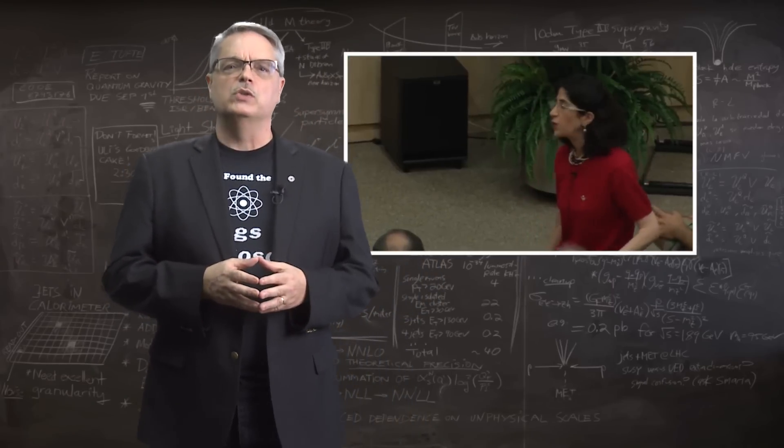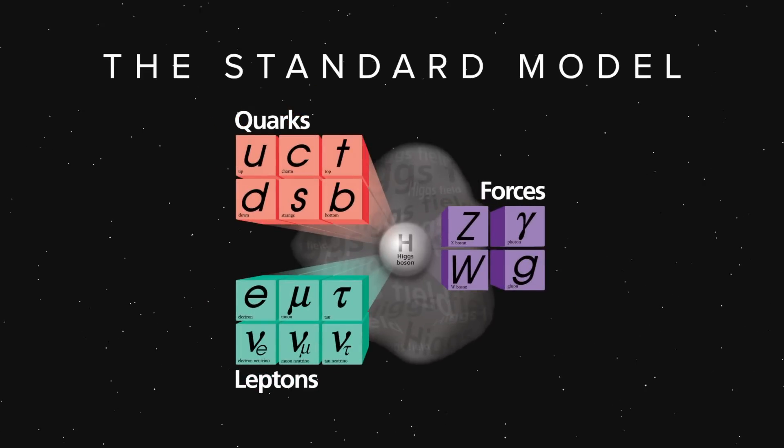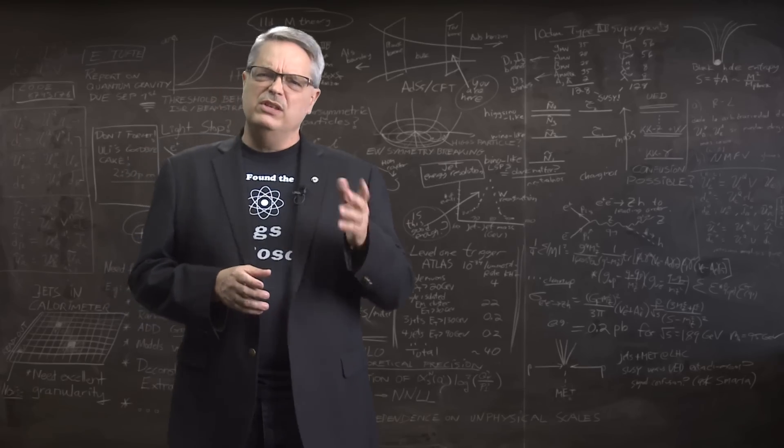Before the Higgs boson was discovered, the Standard Model of Particle Physics was incomplete. The discovery of the Higgs boson, and by extension the Higgs field, completed the Standard Model. This discovery led to British physicist Peter Higgs and Belgian physicist Francois Engler to share the 2013 Nobel Prize in Physics.